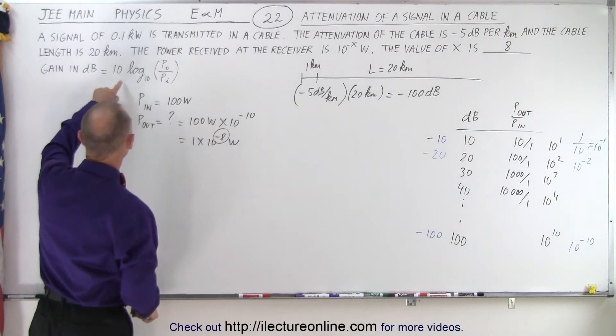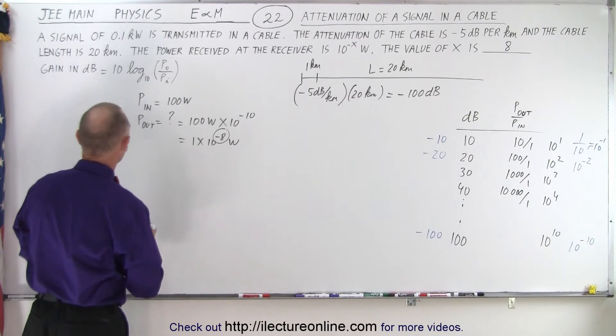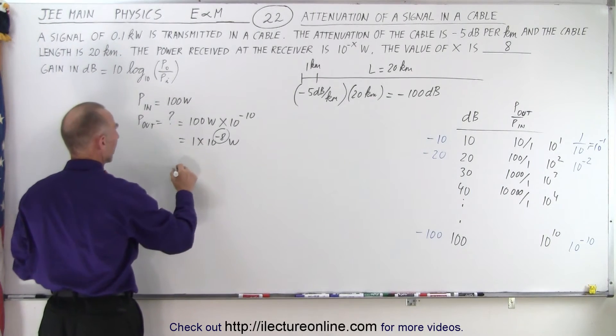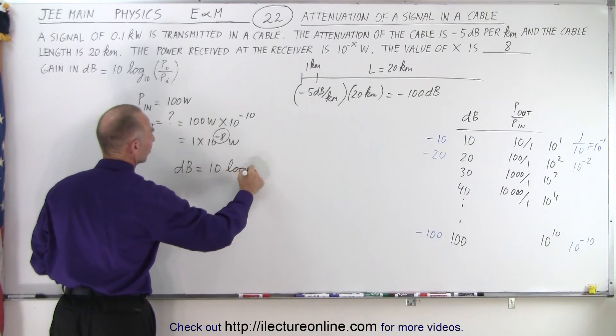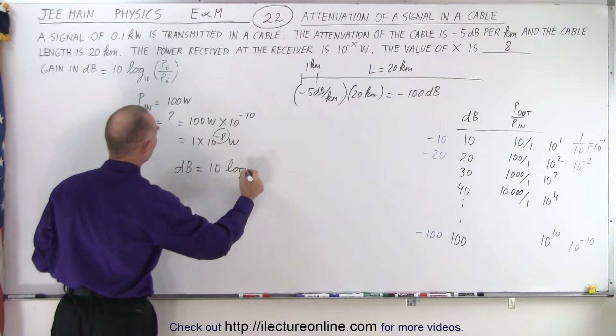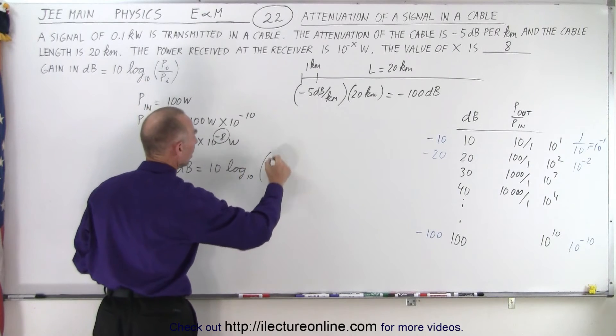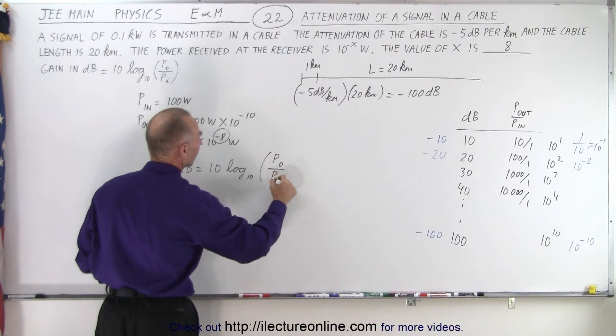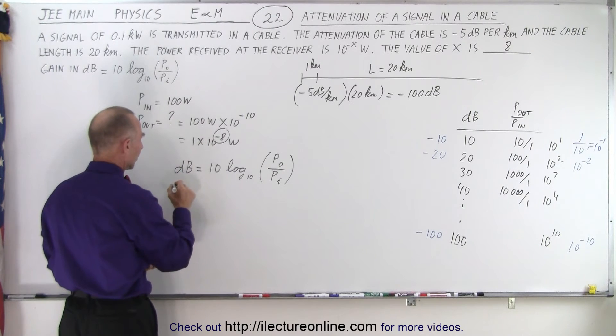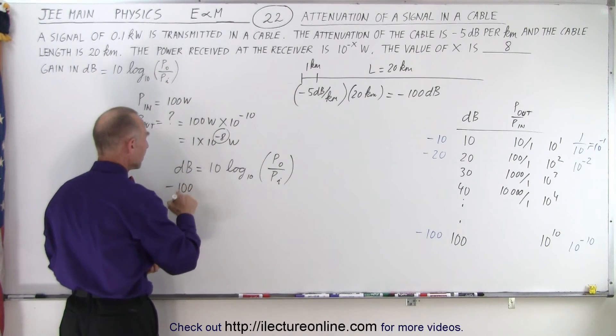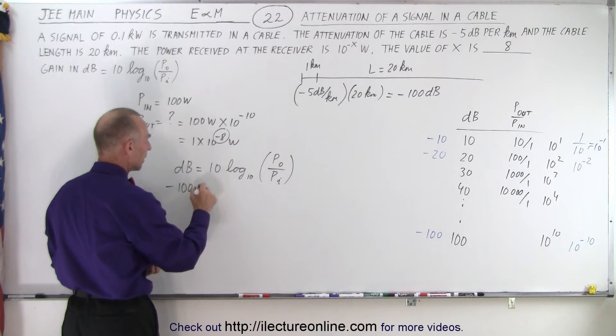However, we can also take the equation. If we take that equation, we have dB equals 10 times the log base 10 - you don't really have to write base 10, we understand that when we see the word log - of power out over power in.